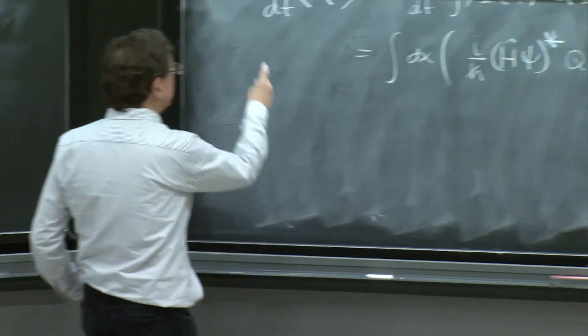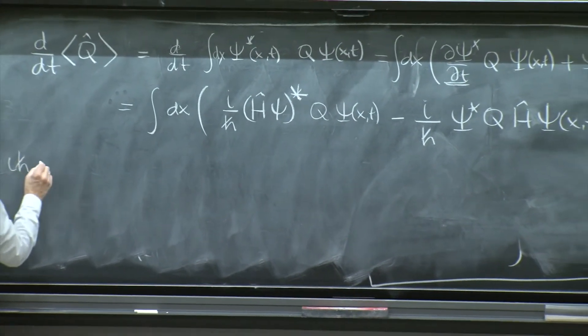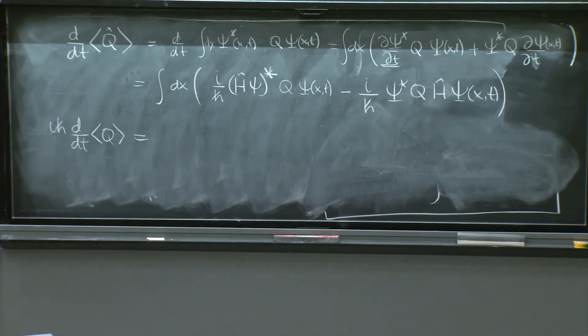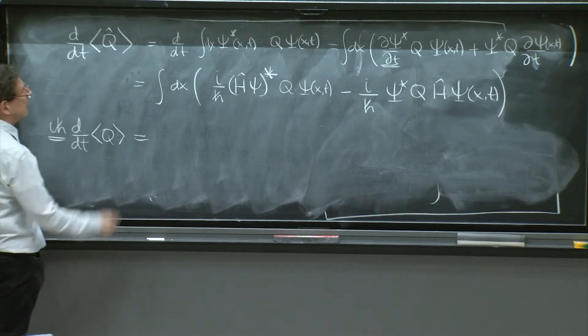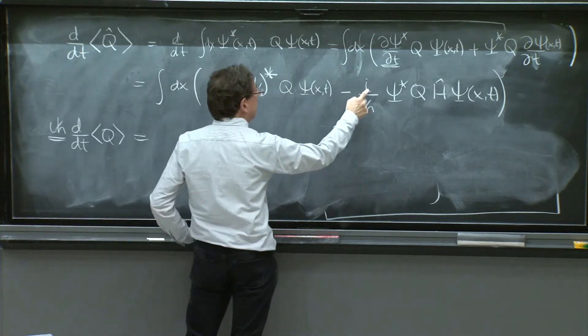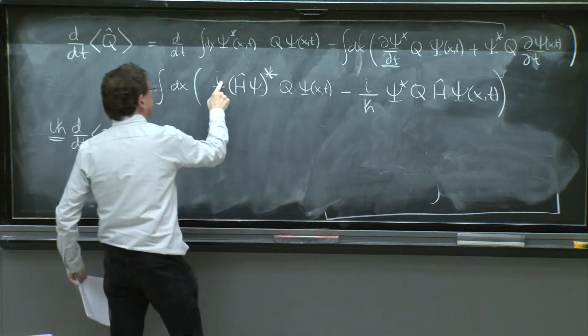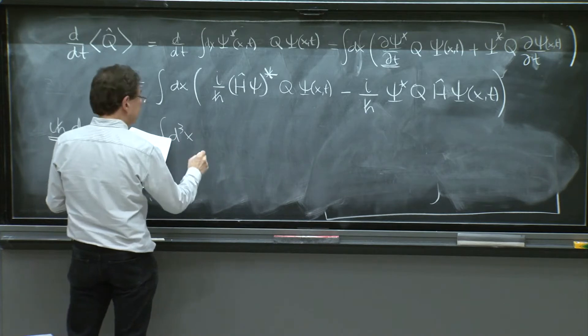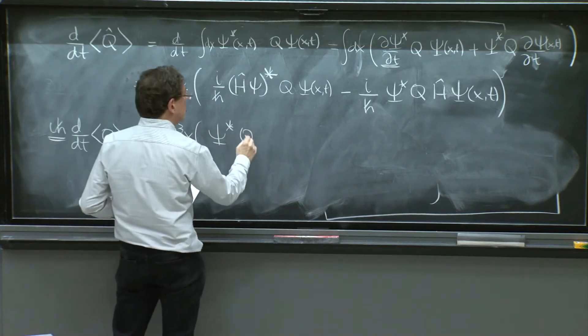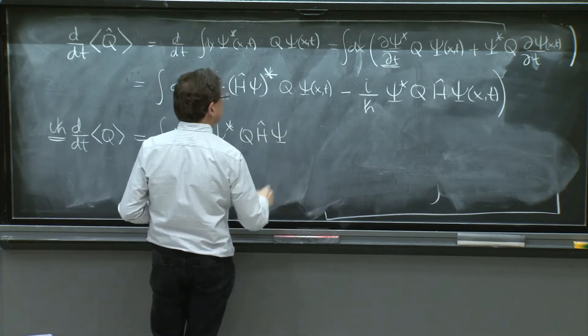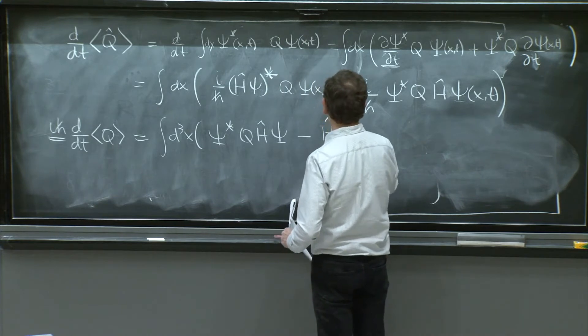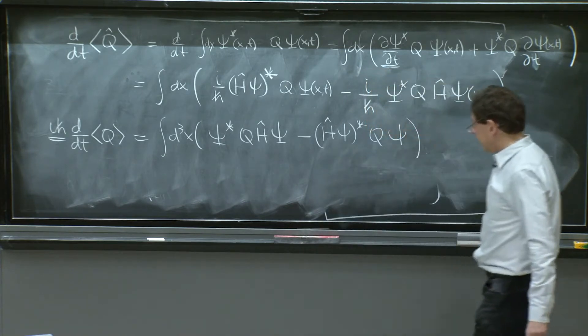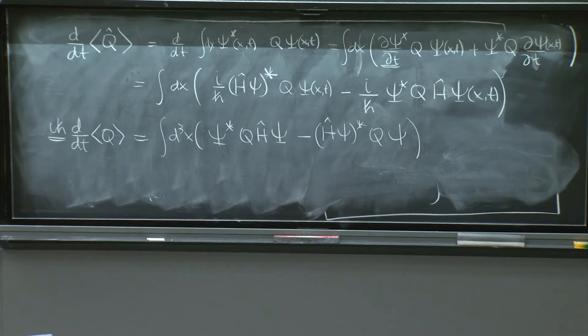So then, it's actually convenient to multiply here by i h bar d dt of q. So I multiply by i h bar. And I will cancel the i and the h bar in this term, minus them this term. So we'll have d cube x psi star q h hat psi, minus h hat psi star q psi. OK. Things have simplified very nicely.